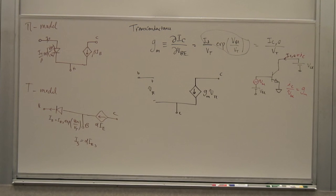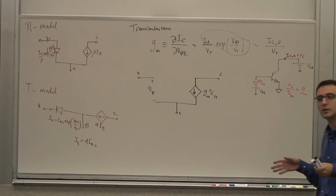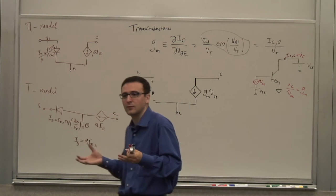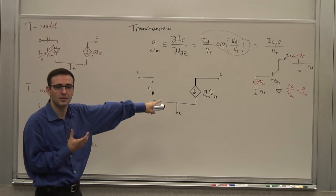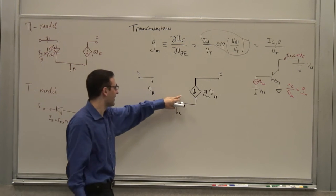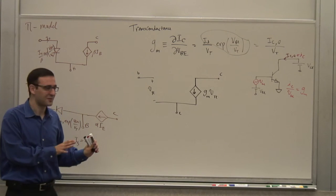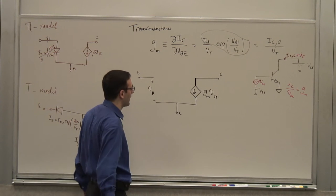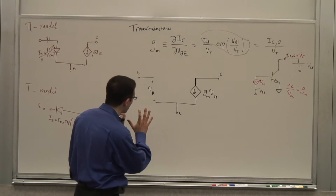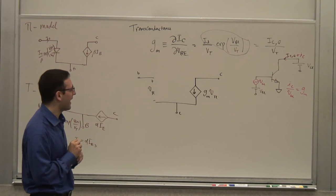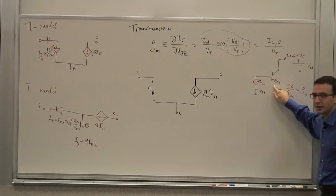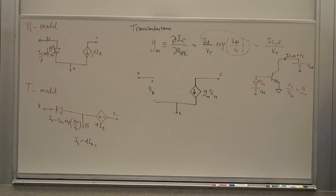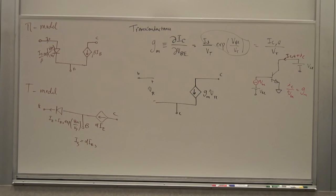Everything else we derive are parasitics — elements that degrade the performance of this transistor. Almost without exception, the gm Vpi current source is the only part that does something useful. Now, I can see that I have a diode between the base and the emitter, so it shouldn't be surprising that I have some sort of resistance between the base and the emitter.